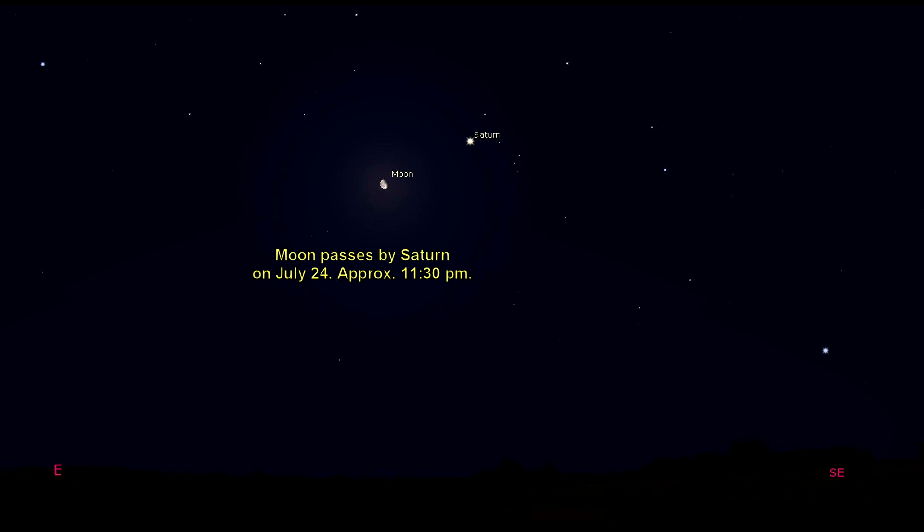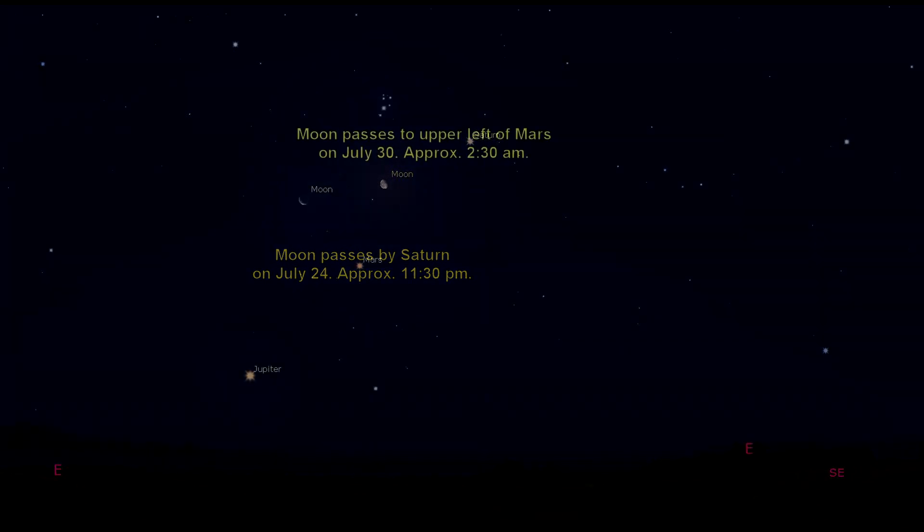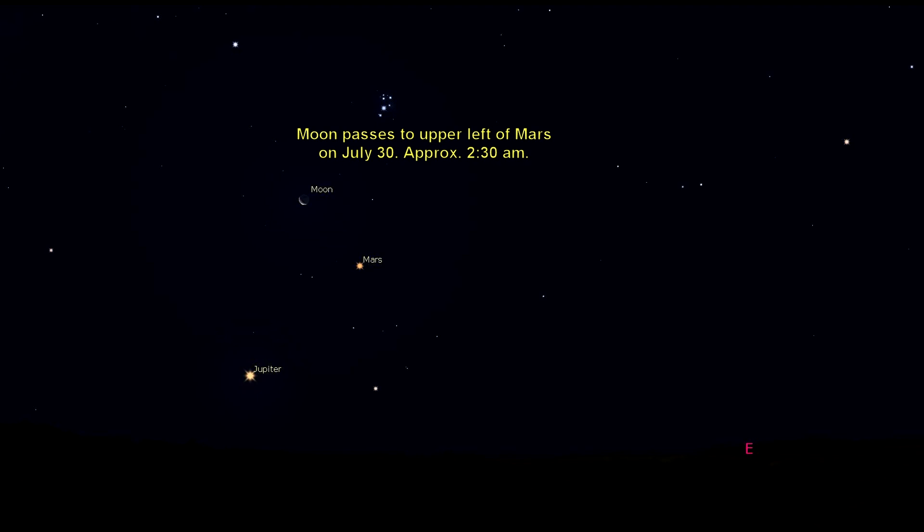The planet Mars rises a few hours later behind the planet Saturn at around 2:30 a.m. and is low in the eastern sky during the wee morning hours. The moon will be passing by the planet Mars on July 30th.